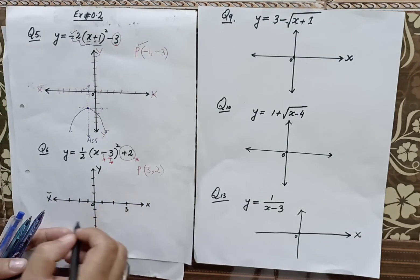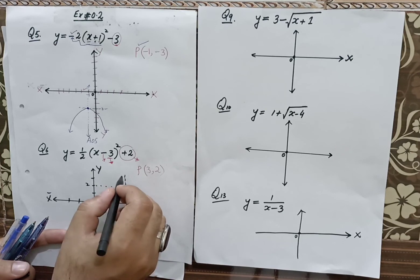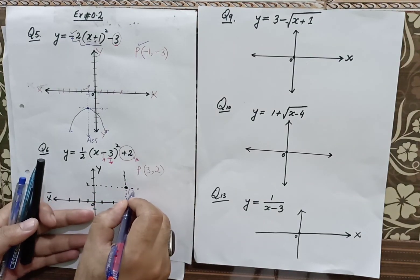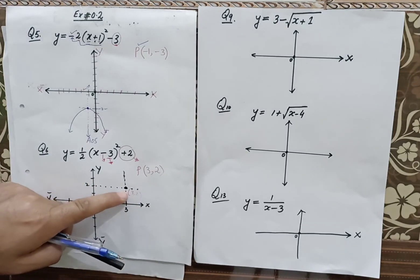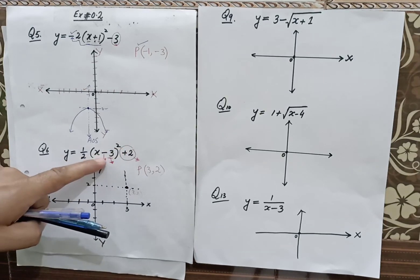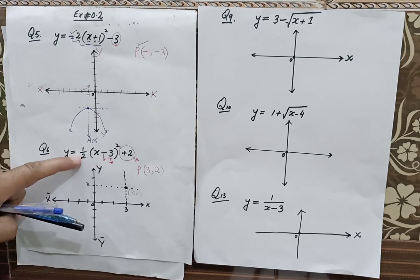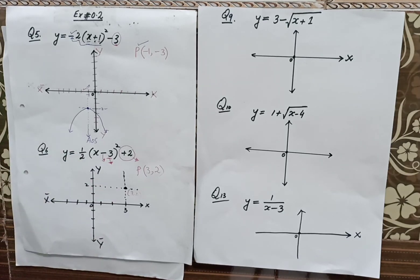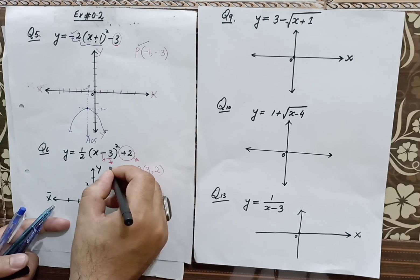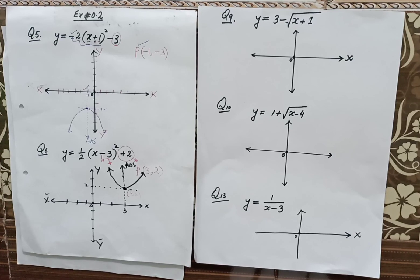So 3 is on the x-axis here and 2 is on the y-axis here. This is the vertex at (3, 2). The given algebraic function is a parabolic or polynomial of degree 2 — a quadratic function. Since the coefficient is positive, the parabola will definitely open upward. This is an upward open parabola and this is the axis of symmetry, A.O.S. Thank you so much.